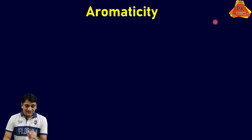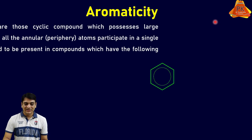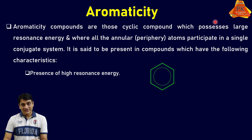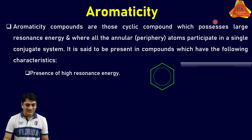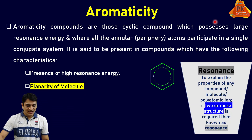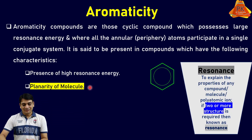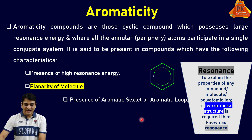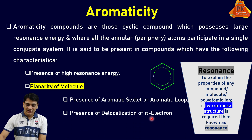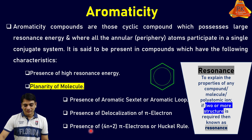As I have already discussed what aromaticity is and its requirements, in my previous video I discussed the presence of high resonance energy. Now in this video I will be discussing the details about planarity of the molecule. In upcoming videos I will discuss the presence of aromatic sextate or aromatic loop, presence of delocalization of pi electrons, and then presence of 4n+2 pi electrons, or Hückel's rule.